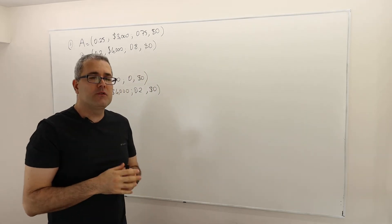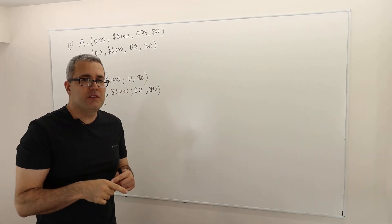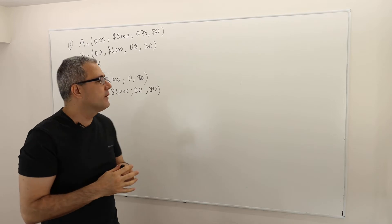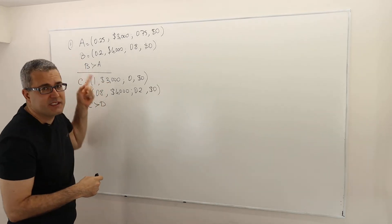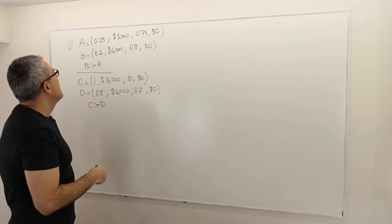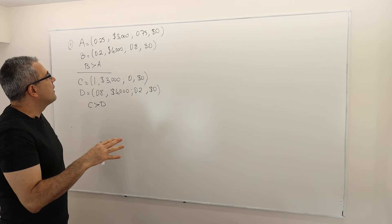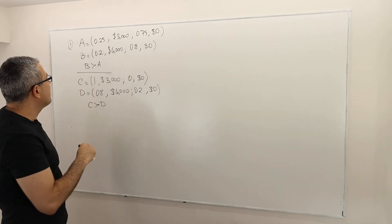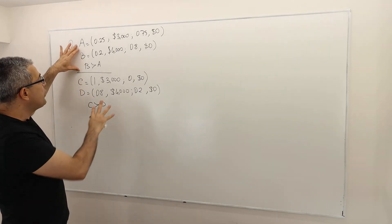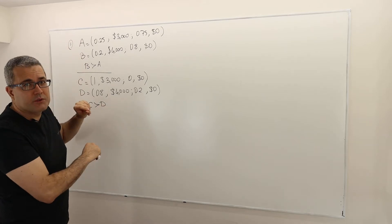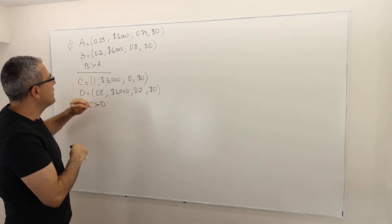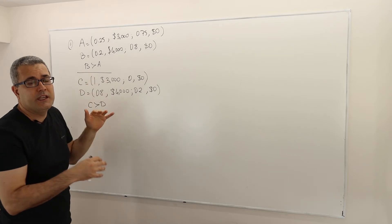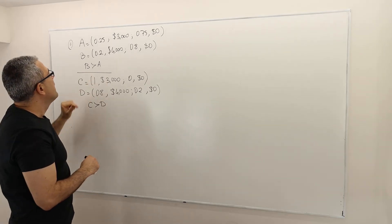This is one of the questions I posted on a course website — I think this is question number six. The question basically says the following: there are two scenarios, and the decision maker is making a choice out of two alternatives in each scenario.